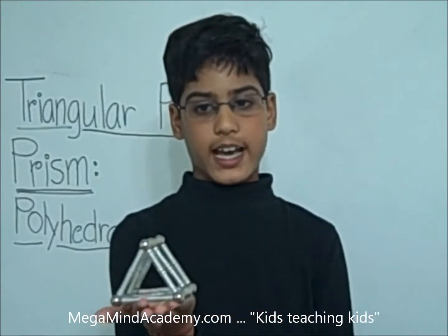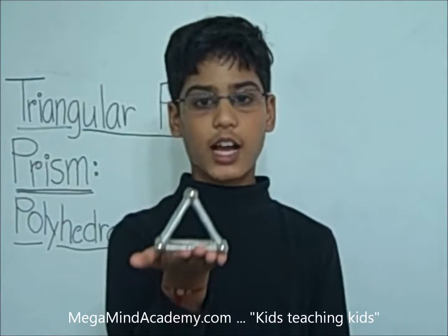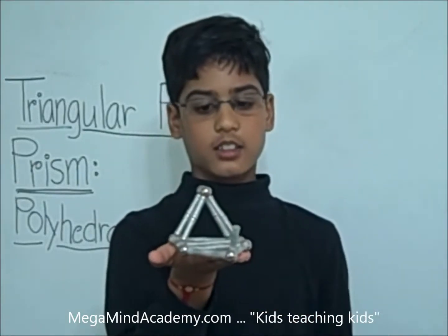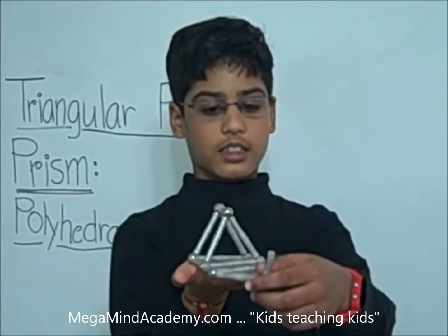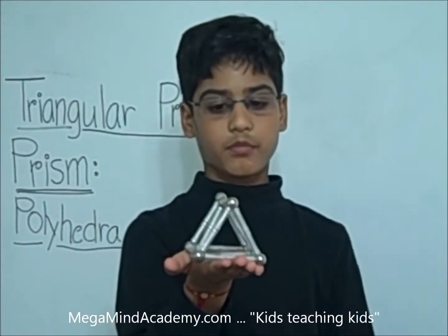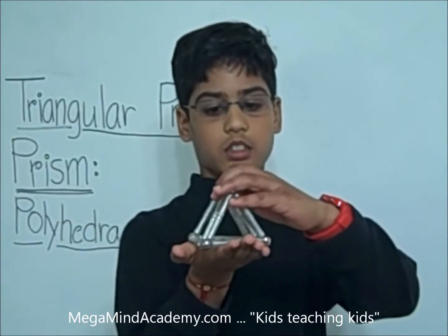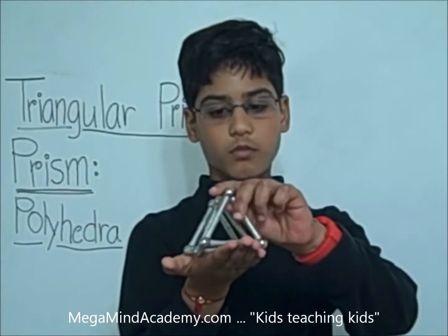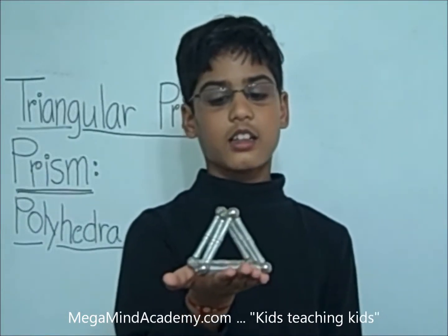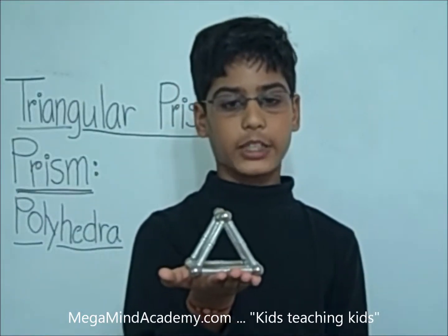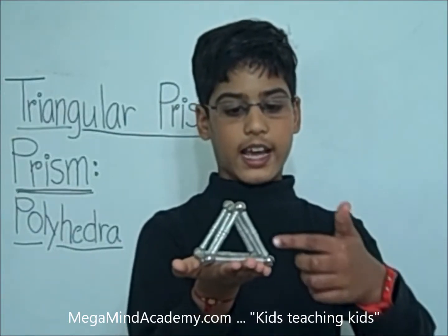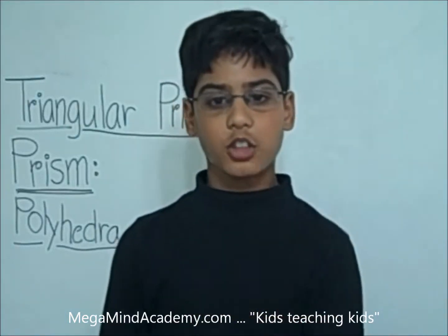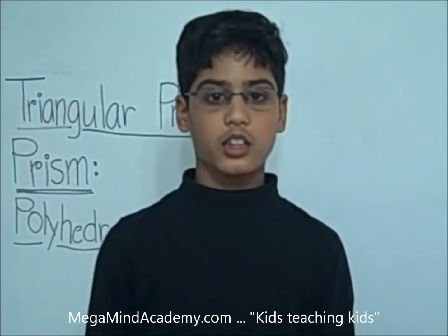The second property it has is that it has the same cross section all along its length. So if we cut this triangular prism at the midpoint, the cross section is a triangle. And the last thing: a prism is named by the name of its shape — like the end is a triangle, so it's named a triangular prism. Let me show you what I just said on the board.